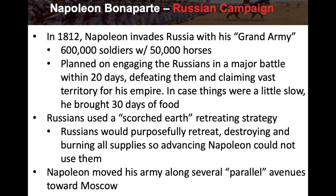In 1812 Napoleon invaded Russia with his Grand Army of 600,000 soldiers and 50,000 horses. His plan was to bring in his soldiers and fight the Russians in one major battle within 20 days, defeat them, and claim vast territory for his empire. In case things moved slowly, he brought food for 30 days. Unfortunately for him, he should have brought much more — the Russians used a scorched earth retreating strategy.